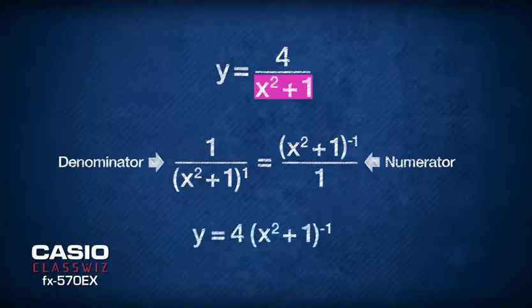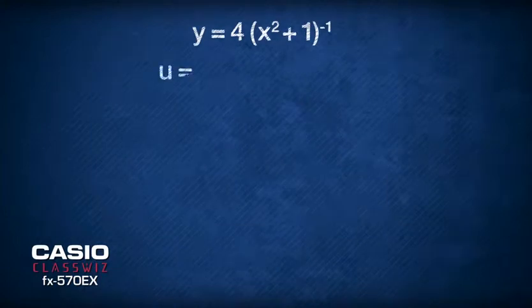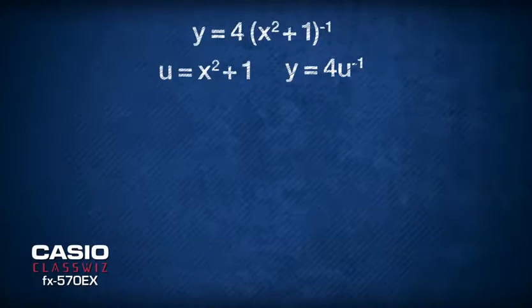To differentiate, we need to employ differentiation by substitution. First, we substitute x²+1 as u, then we have y = 4u^(-1).